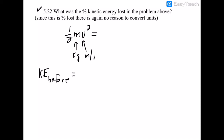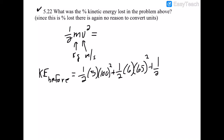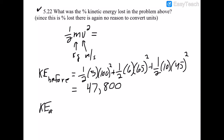Kinetic energy before the collision: ½(5)(100²) + ½(6)(65²) + ½(10)(45²). Adding those up gives 47,800 (in ton·mph² units — not joules, but that's fine for the ratio). We leave off the unit label since it's an unusual combination.